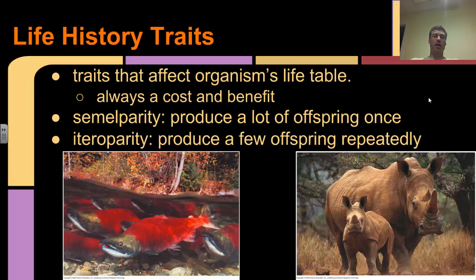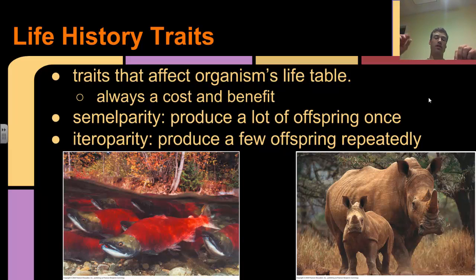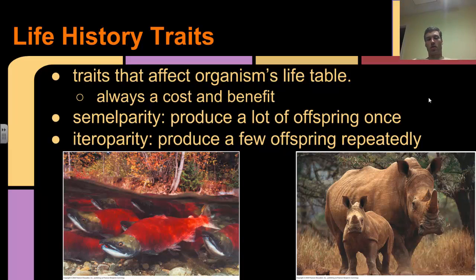Iteroparity is where you produce a few offspring repeatedly - things like humans. Most mammal species display iteroparity where you can produce a few offspring, take care of them, raise them up, and then produce a few more. This changes how populations grow. The salmon population starts with a lot of youngsters, they grow older, spawn, reproduce - all of a sudden you have a lot of youngsters again, all the adults die off, and you have a very young population. Whereas organisms that display iteroparity are going to be a little more steady over time - you can have a pretty even number of adults and youngsters at the same time.